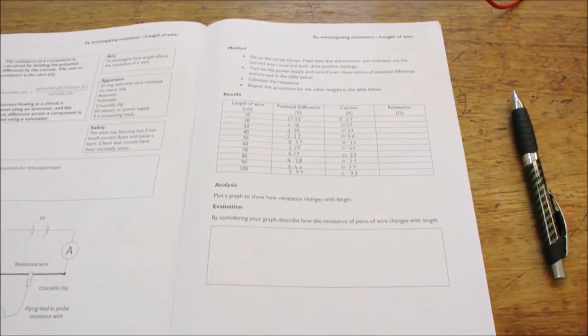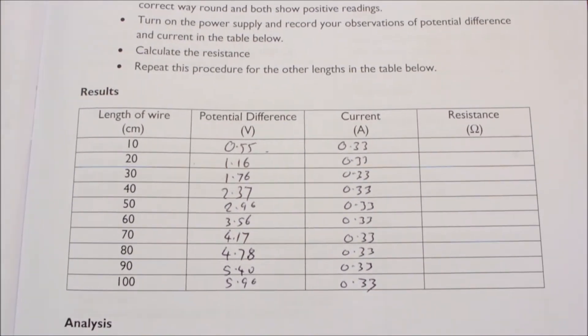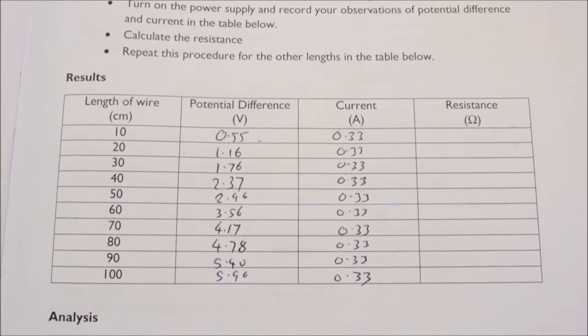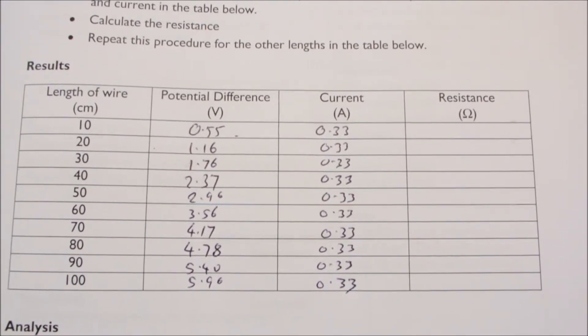And here are the results for the different lengths from 10cm all the way through to one meter, and you can see that the potential difference is increasing but the current is remaining constant, and that's fine.